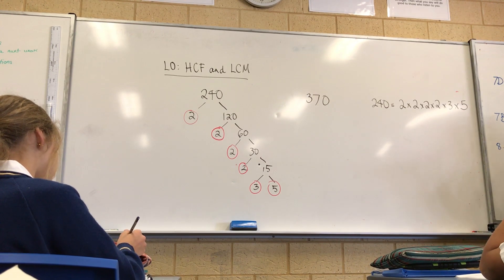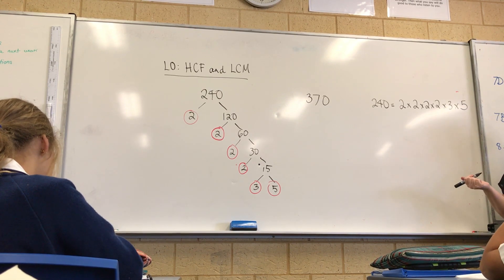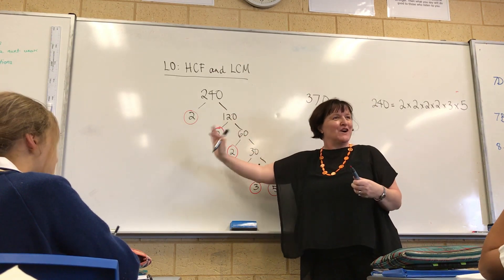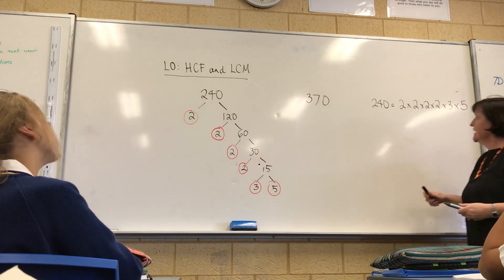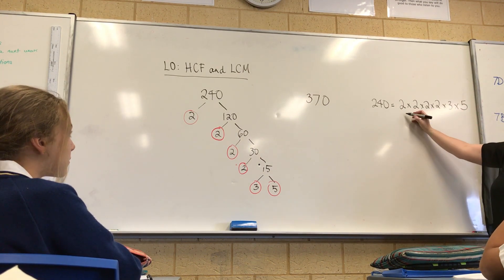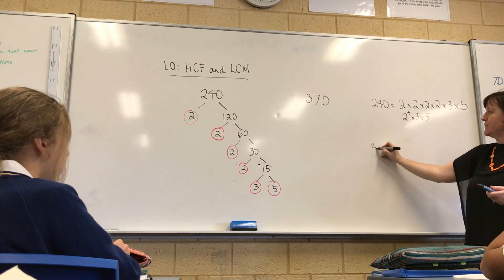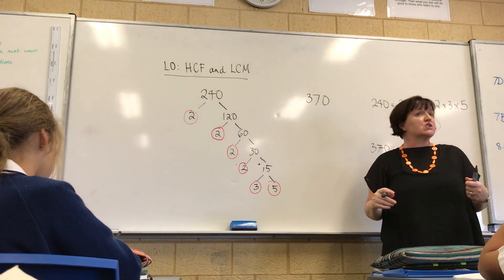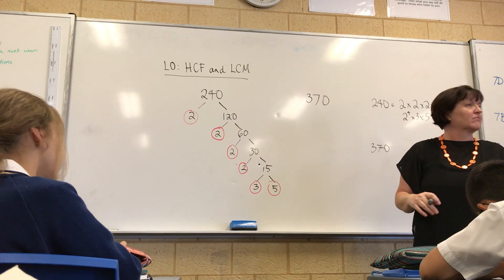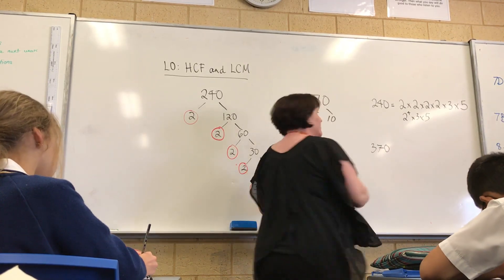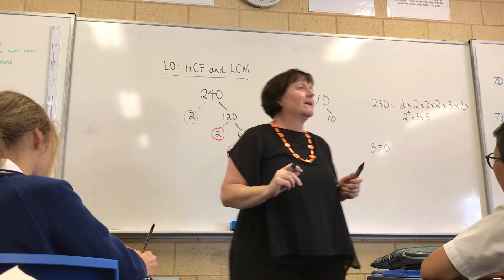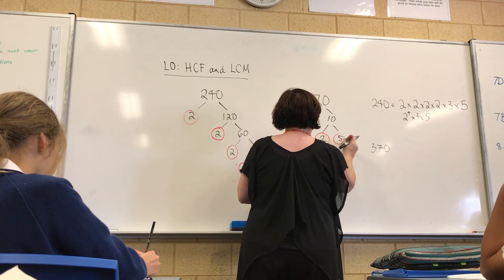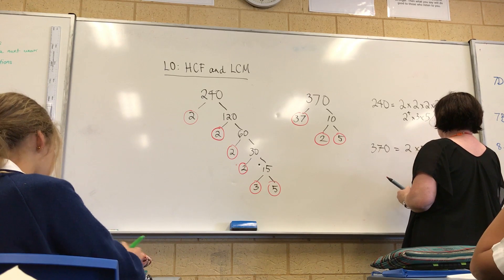If you did that in your calculator, you'd get 240, obviously, because we've broken it down and divided it repeatedly. You could also write it as 2 to the 4 times 3 times 5. But remember, for the highest common factor and the lowest common multiple, you need them written out separately. Now for 370: you break it up into 37 and 10. Is 37 a prime? Yes it is. And then 10 breaks into 5 and 2. So the prime factors of 370 are 2, 5, and 37.